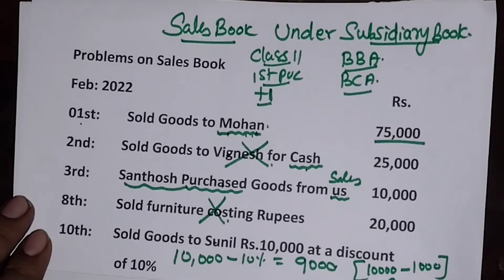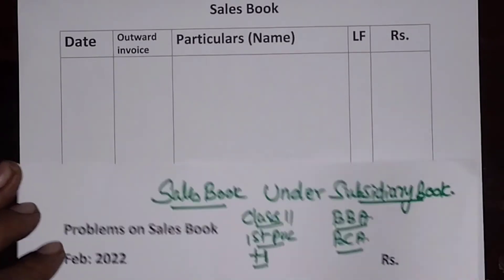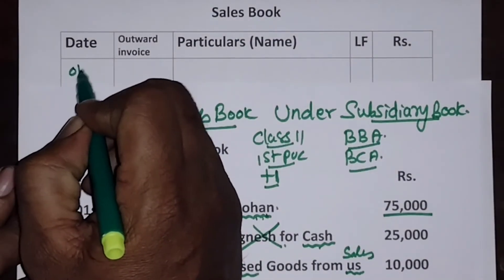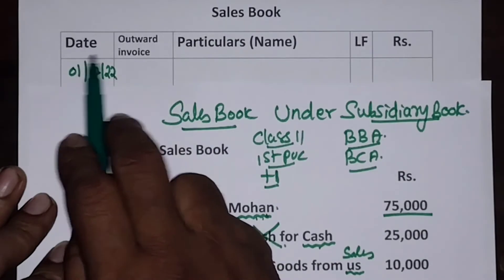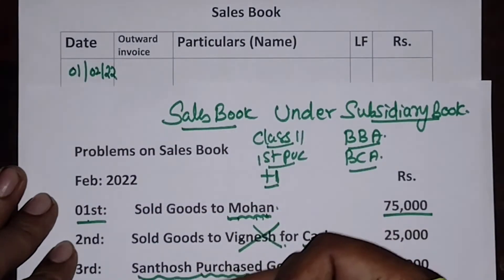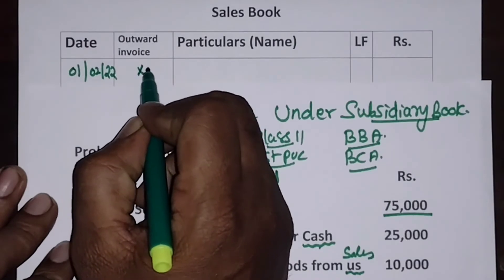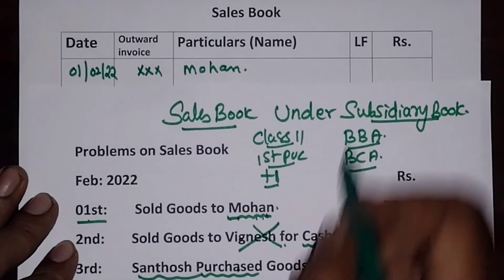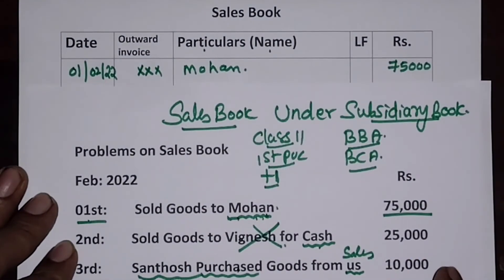Out of 5 entries, only 3 will appear because 2 are ignored. Now recording in the sales book — the columns are: date, outward invoice number, and name of the person. An outward invoice is the bill we provide at the time of sale, and we record its number for our reference. Entry 1: Date — 1st February 2022, sold to Mohan, amount ₹75,000.